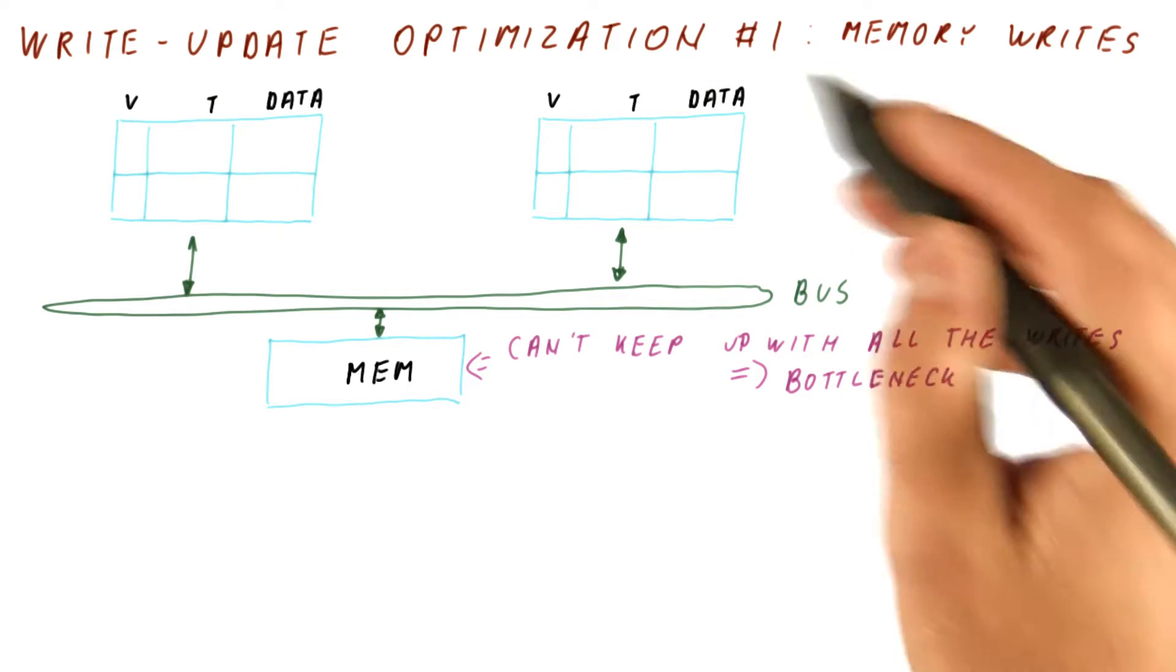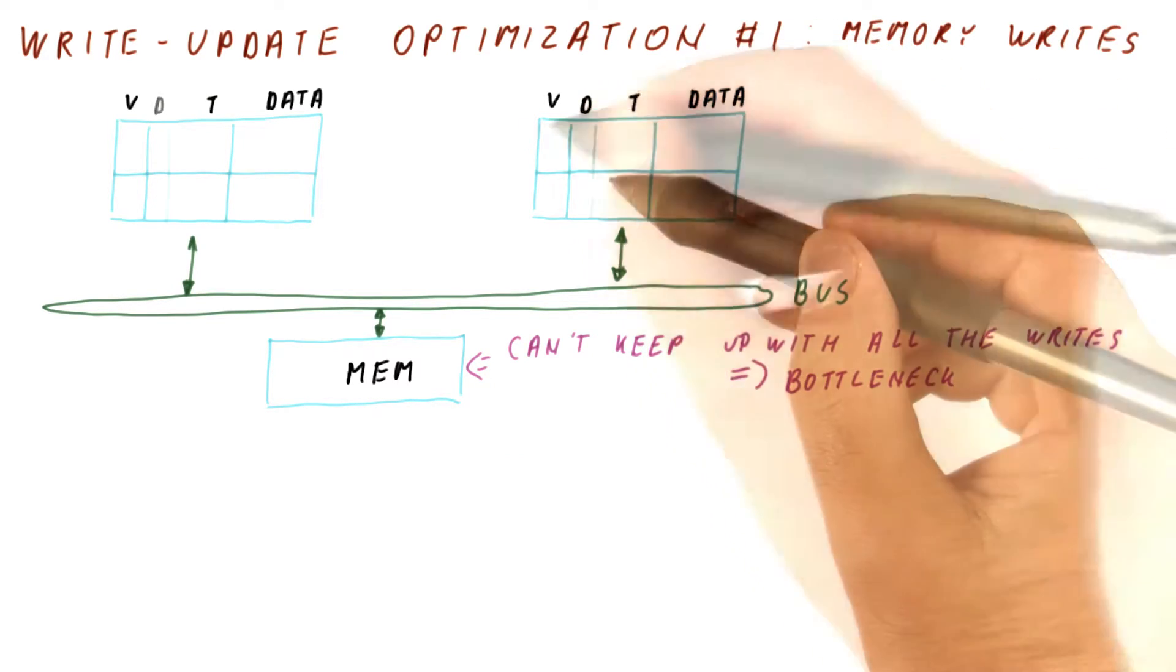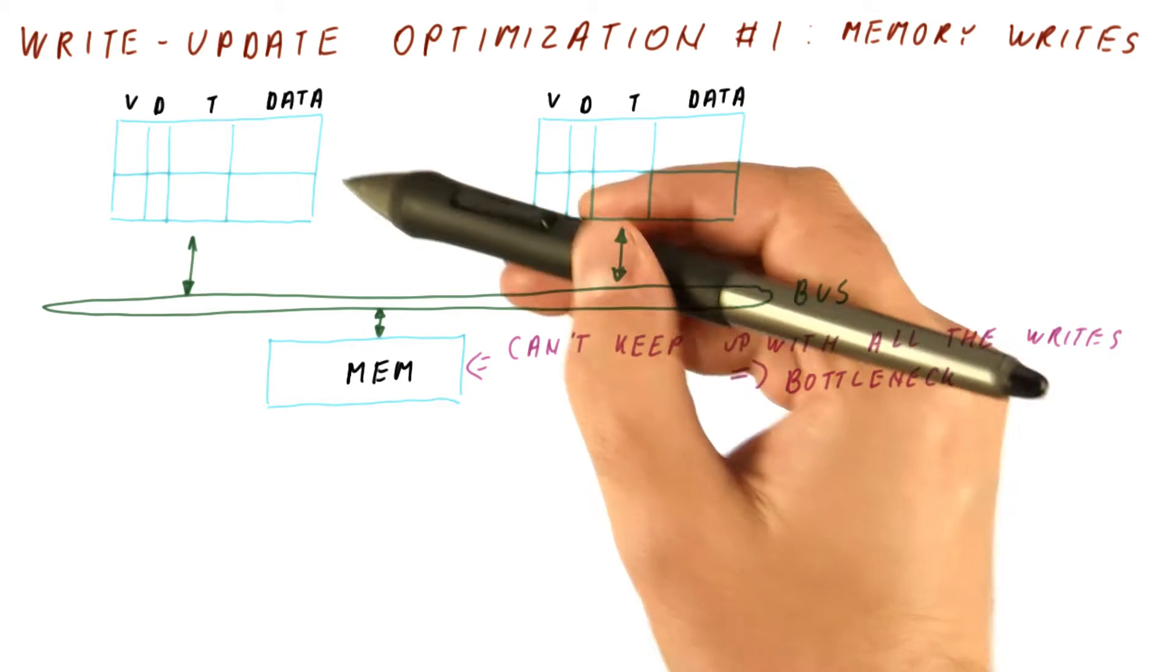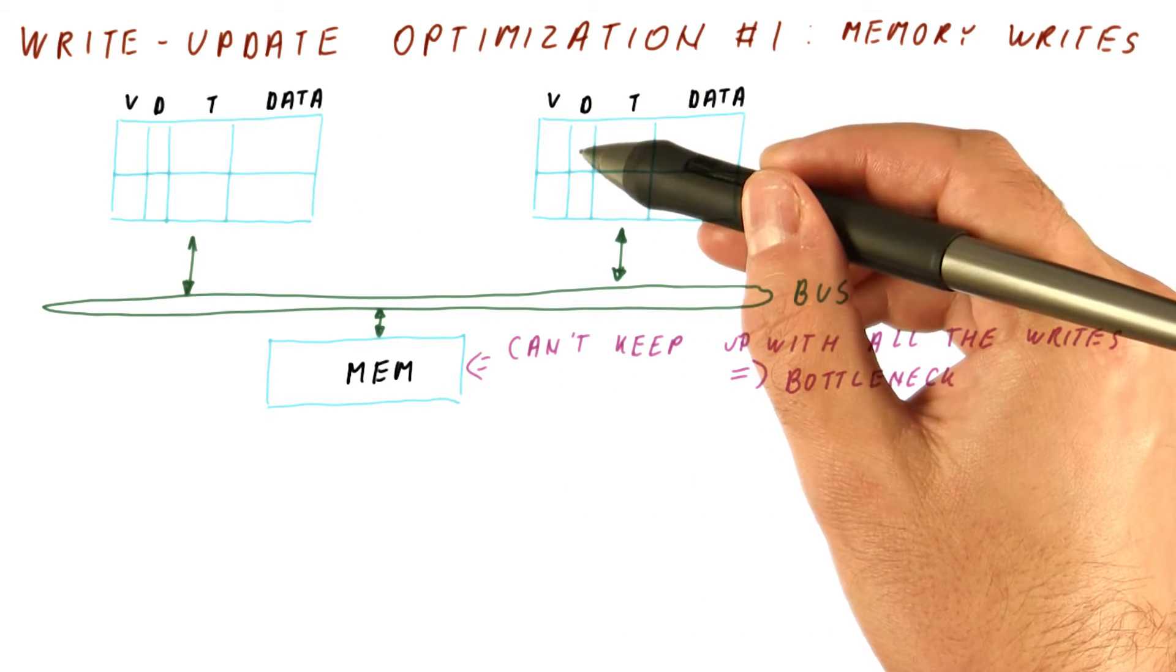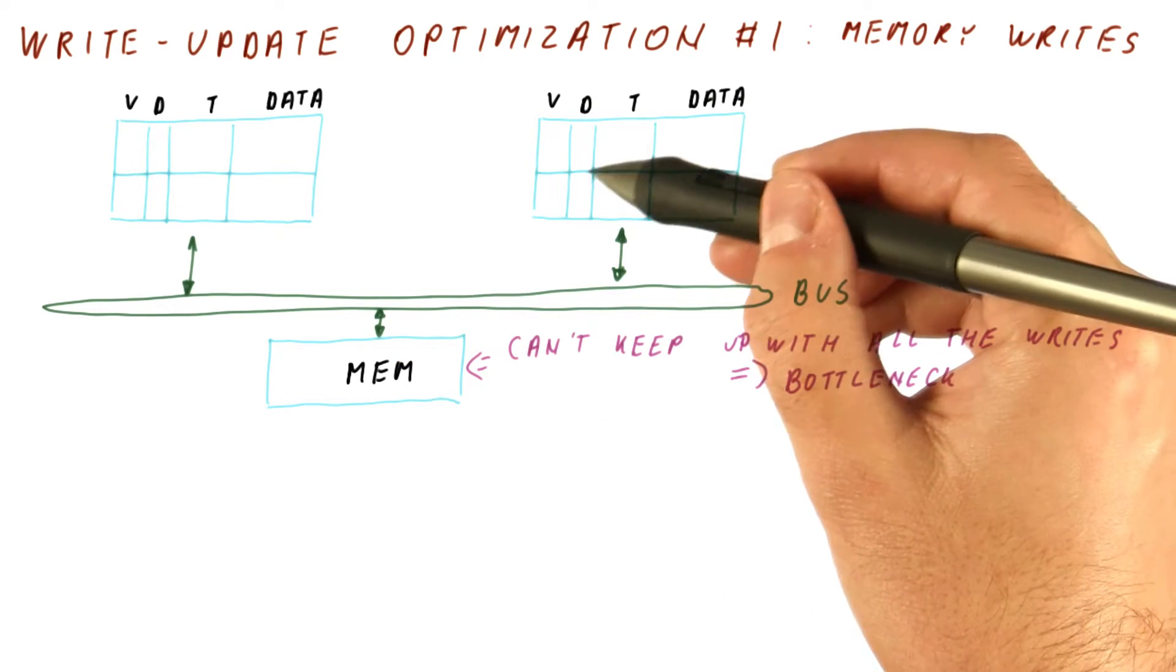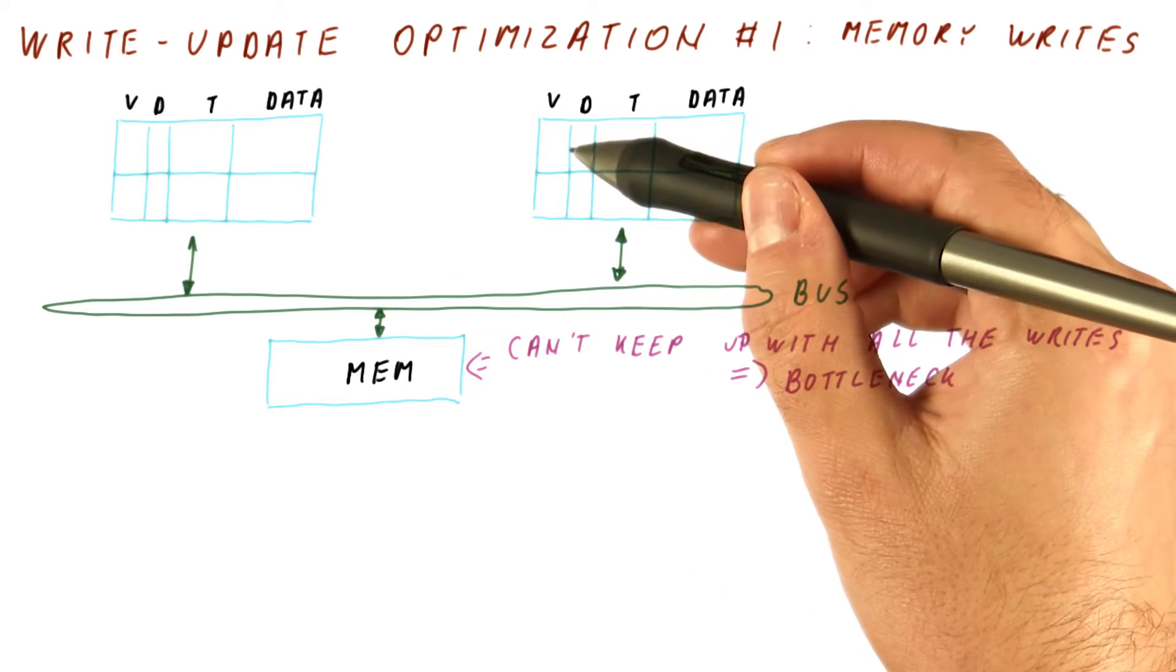So the solution to reducing memory traffic here will be the same. We will add a dirty bit to each block in each of the caches, and this dirty bit will allow us to delay a memory write until we actually replace a dirty block from our cache.